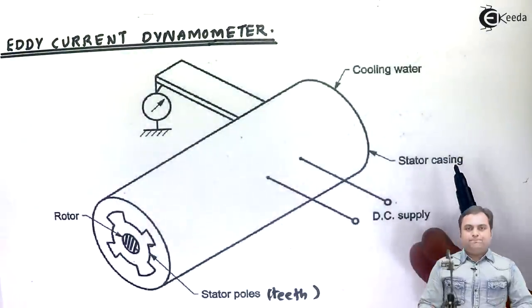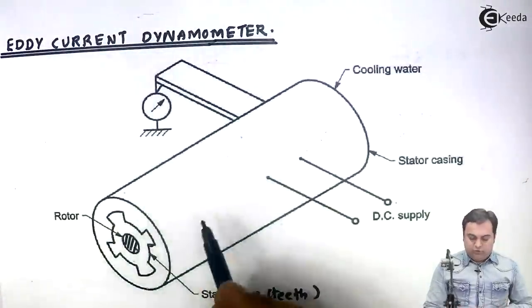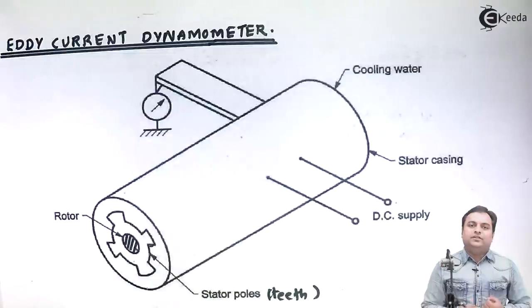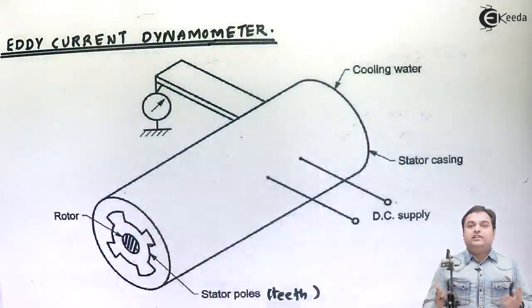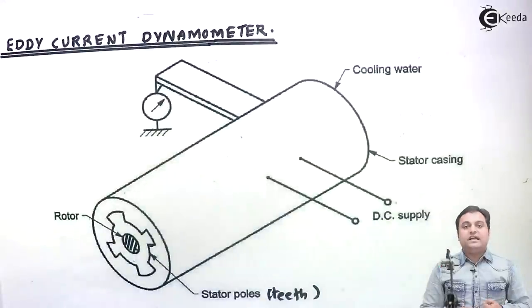As we have seen, in the case of mechanical dynamometers, friction was involved. Here there is no contact between rotor and stator, so friction is reduced. That is an advantage of the eddy current dynamometer - friction is absent. Also, these dynamometers are fast in operation.